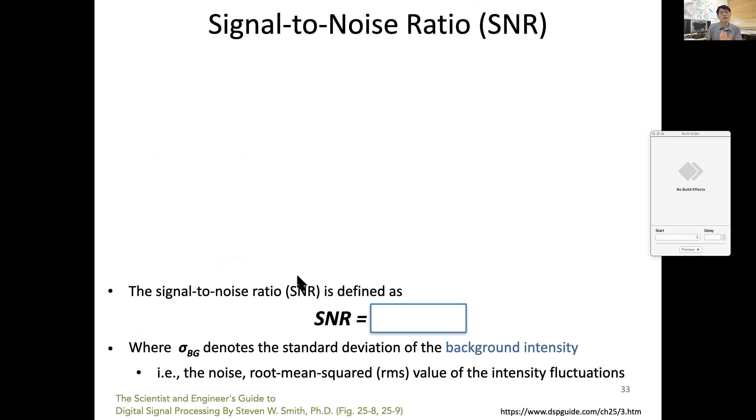The fundamental thing is that every time you take a signal, you have noise, and you need to explain the quality of your image. A good way in general is to talk about signal-to-noise ratio.